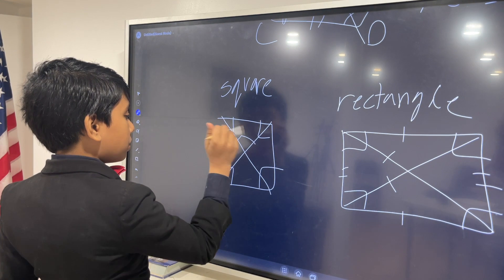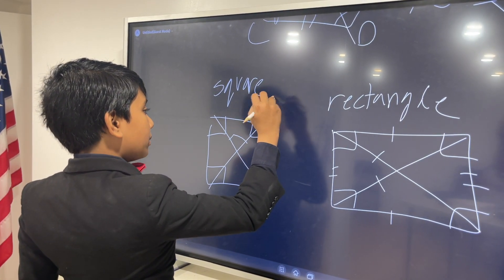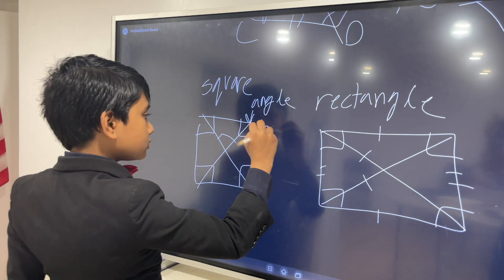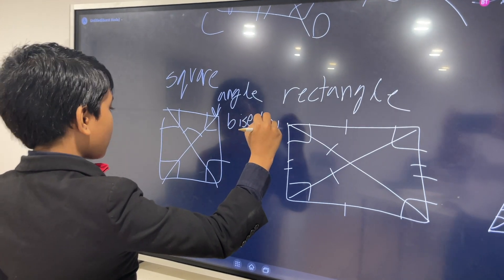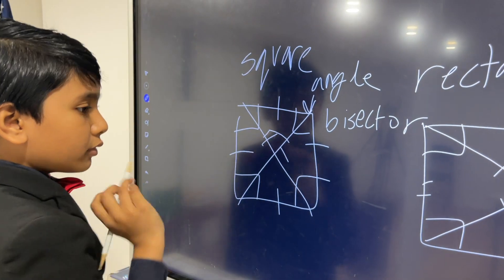It has perpendicular diagonals, and it's an angle bisector. It has congruent diagonals, all congruent sides.